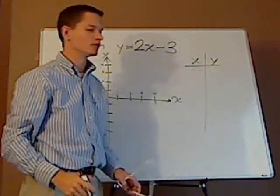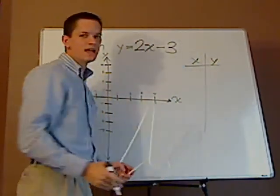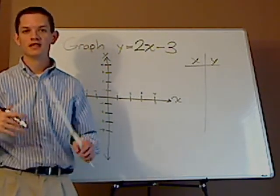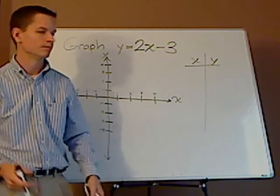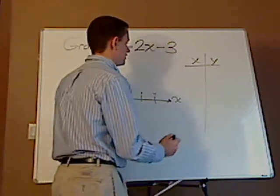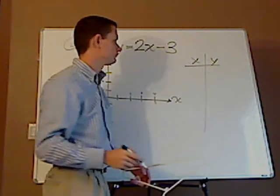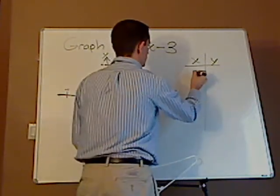When you pick your X's, what you want to do is pick relatively simple X's and pick enough so that you know how to graph it. So let's say negative one, zero, one, two.